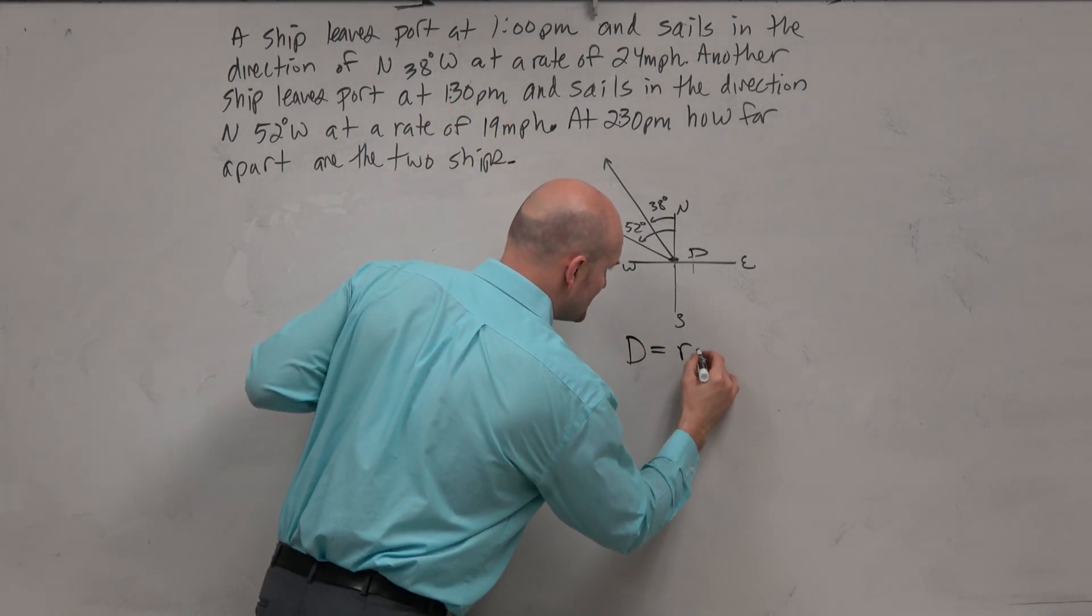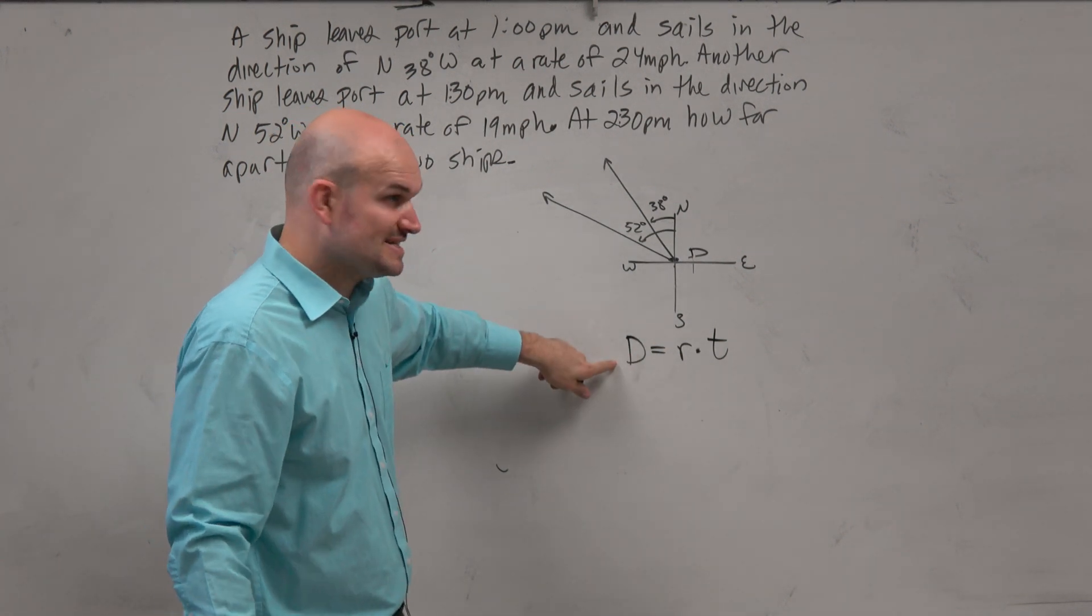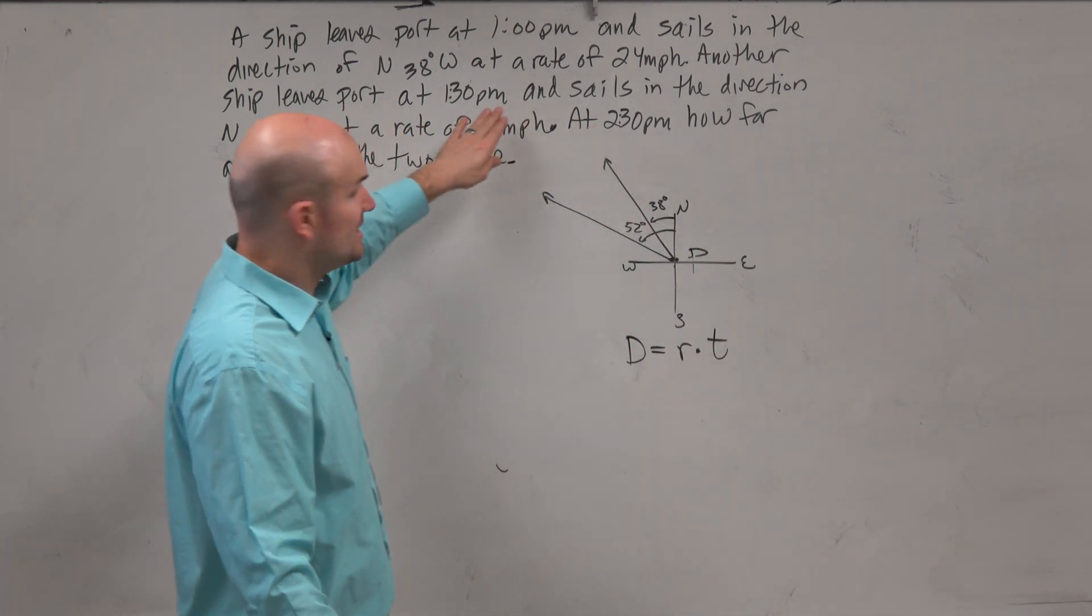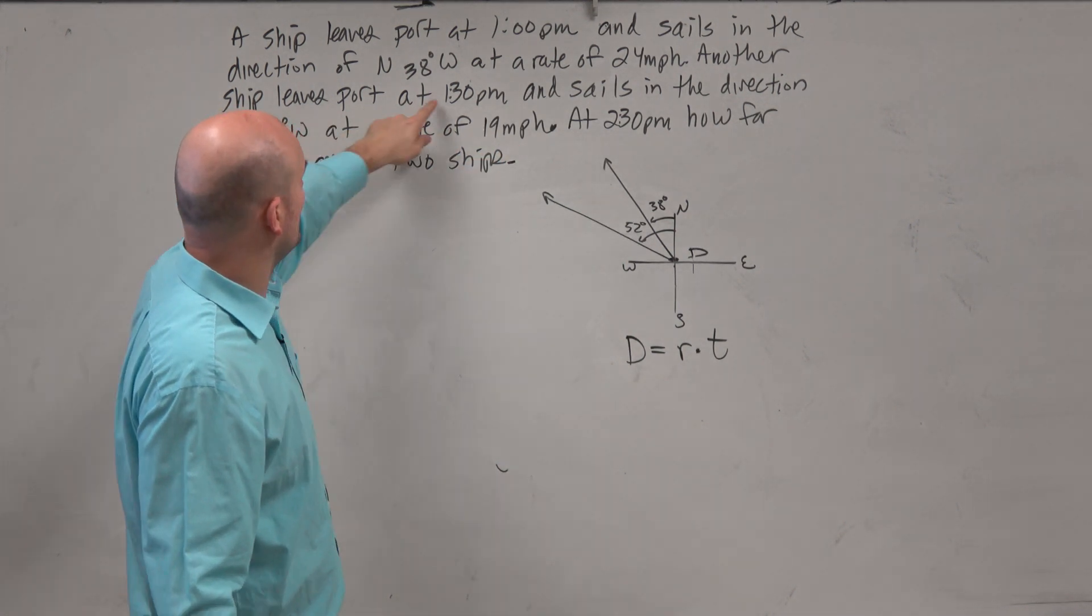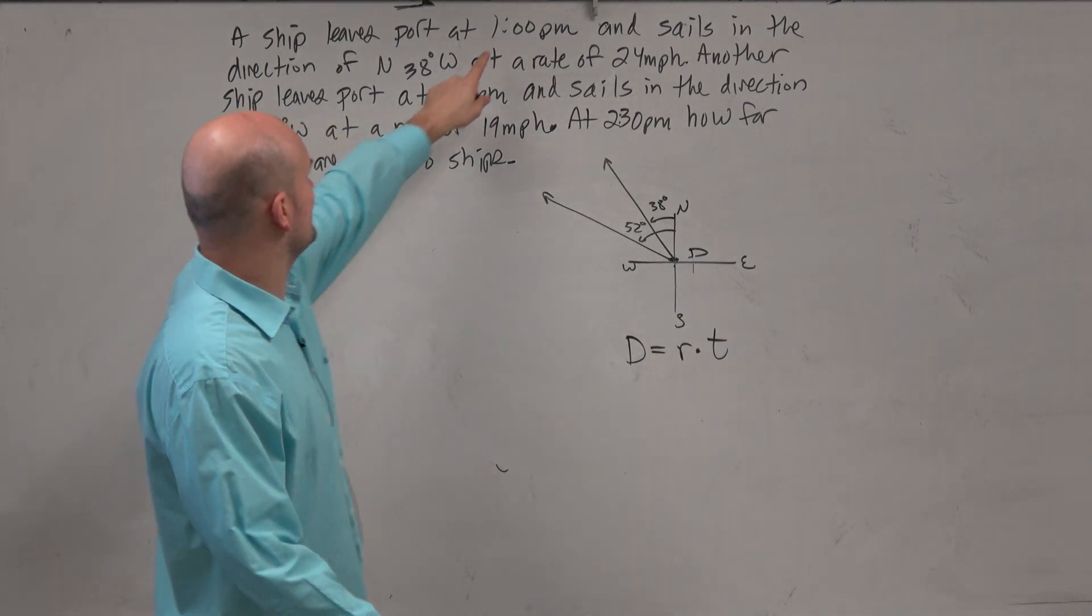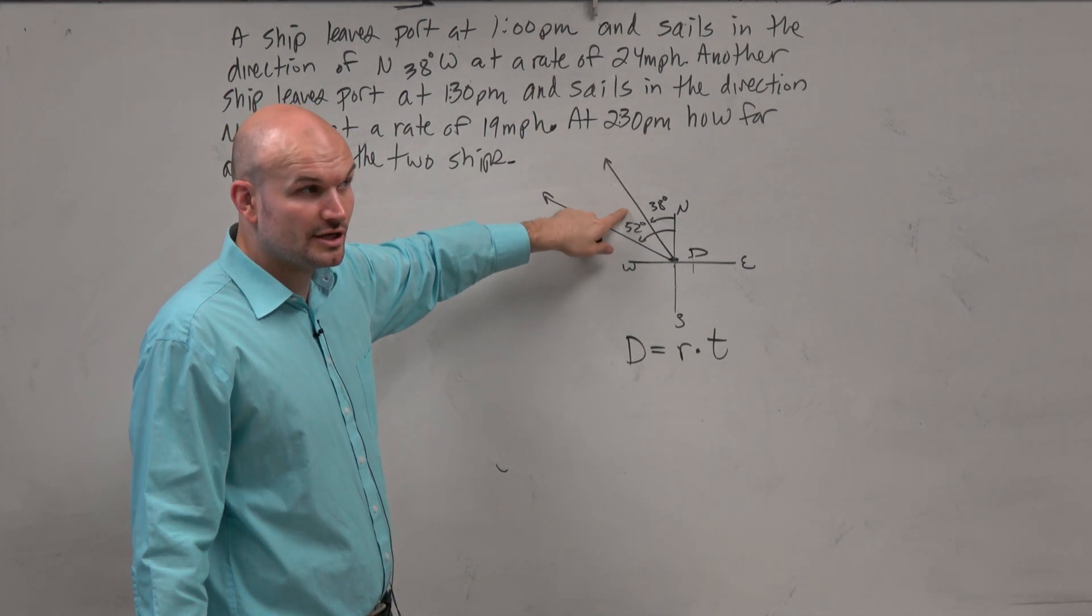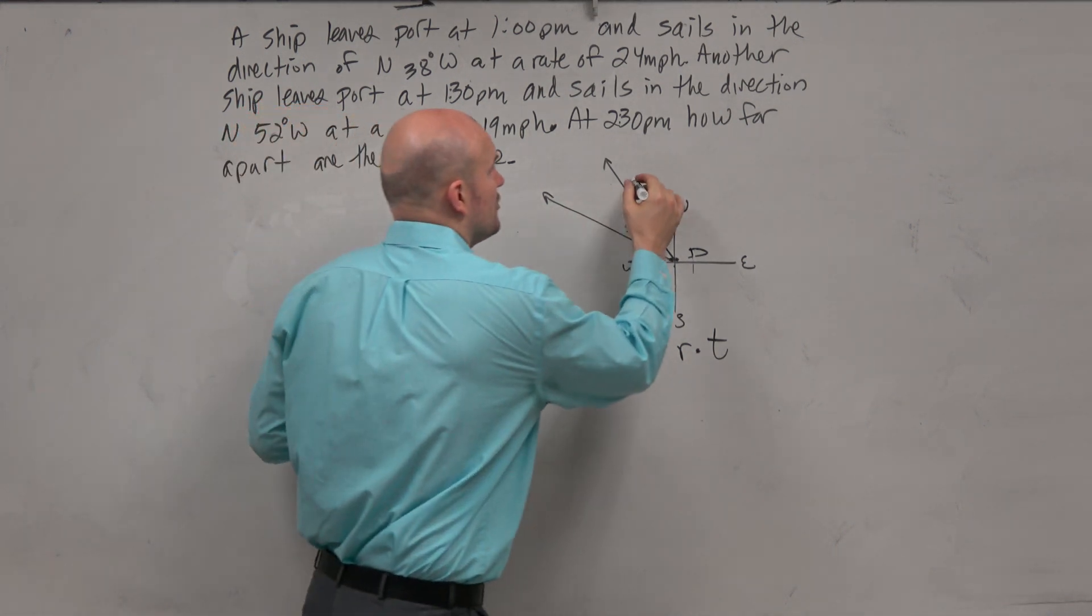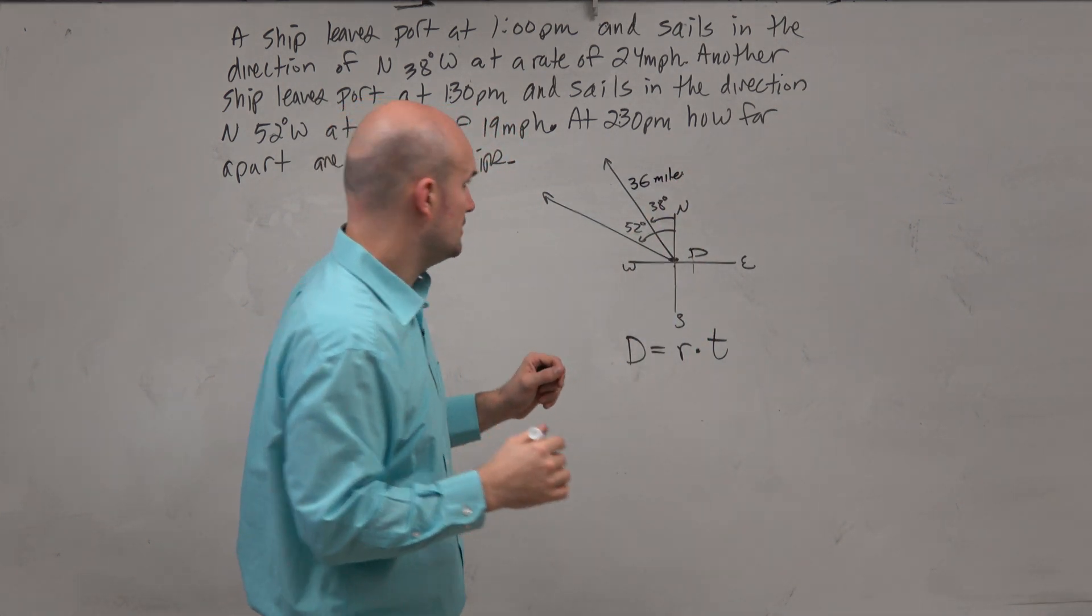So now we've just got to figure out if we have the rate and we need to find distance, that means we need to know the time. It doesn't say how long they were traveling, but it does say when they start and they ended. So we just need to calculate the time. So this one started at 1:30, and then we want to know at 2:30. Wait, sorry, this one left at 1:00, so 2:30, so that's an hour and a half. So if it's traveling 24 miles per hour, and it goes for one hour, that's 24 miles. And then another half would be another 12, right? So this one's going to be 36. Yeah, miles.